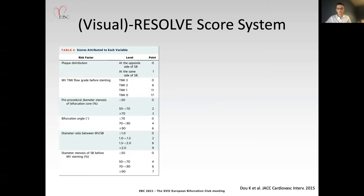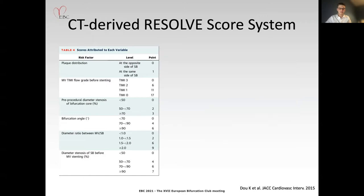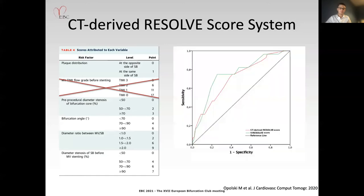Originally, the score consists of six different variables, and five out of those six — with only the exception of TIMI flow grade — can be derived from pre-procedural computed tomography angiography, a modality currently emerging as an attractive method for non-invasive assessment of coronary arteries before PCI. Our group previously showed that the quantitative CTA Resolve score performs as well as the gold standard angiographic visual Resolve score. Whereas quantitative coronary analysis provides objective determination of disease severity, it can be time-consuming and thus less frequently used in real-life clinical practice.